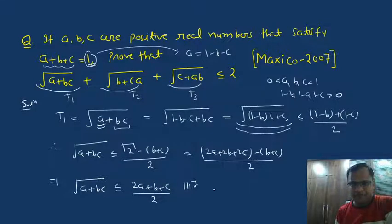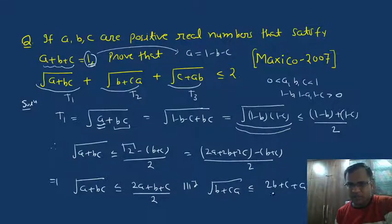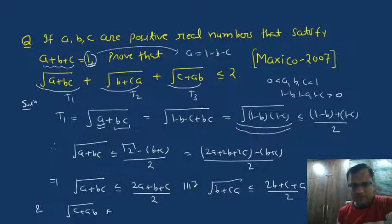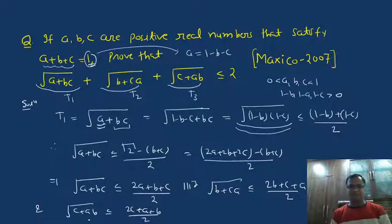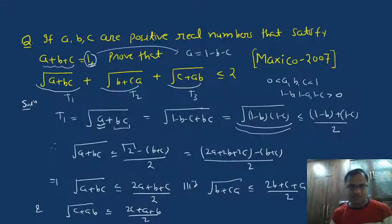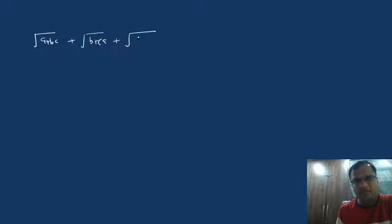Similarly, we can write: root of (b plus ca) is less than or equal to (2b plus c plus a) divided by 2, and root of (c plus ab) is less than or equal to (2c plus a plus b) divided by 2. If we add all three results, then root of (a plus bc) plus root of (b plus ca) plus root of (c plus ab) is less than or equal to 1/2 times the total sum.